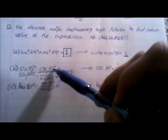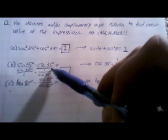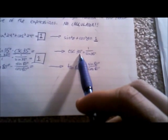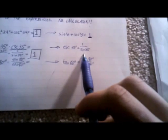Next one, we have sine of 35 degrees times cosecant of 35 degrees. For cosecant, we're going to use a quotient identity, which states that cosecant of theta equals 1 over sine of theta — both the same angle, so it applies here.